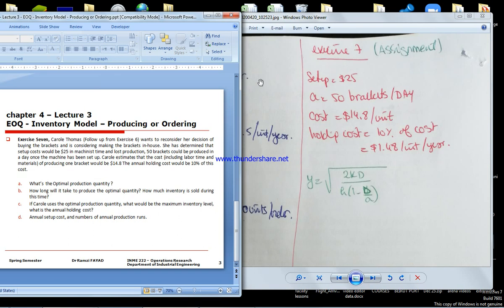If she wants to reconsider her decision of buying the bracket and consider making the bracket in-house, she has determined the setup cost would be $25 in machine time and lost production. Fifty brackets could be produced in a day once the machine has been set up.